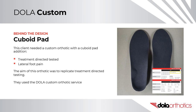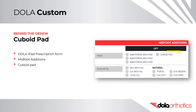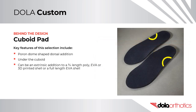Behind the Design – Cuboid Pad. This client needed a custom orthotic with a cuboid pad addition. The aim was to replicate successful treatment-directed testing for lateral foot pain. They used the Dollar Custom Orthotic Service and selected the cuboid pad in the midfoot additions section on the Dollar iPad prescription form. A cuboid pad is a dorsal addition – a pour-on dome-shaped pad placed under the cuboid. It can be an extrinsic addition to a three-quarter length poly, EVA, or 3D printed shell, or used on a full-length EVA shell.